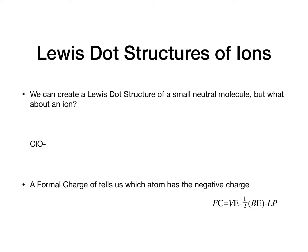Let's also think about Lewis dot structures of ions. If we look at CLO⁻, where this is chlorine and the other one is oxygen, the valence electrons here are seven plus six plus one to account for the negative charge. Let's go ahead and put our chlorine connected to our oxygen. We have 14 valence electrons, so we distribute those: 2, 4, 6, 8, 10, 12, 14.